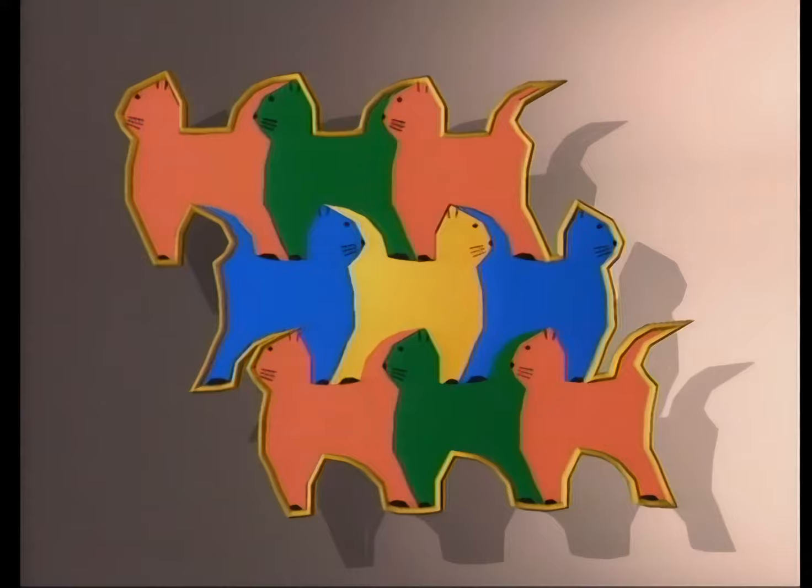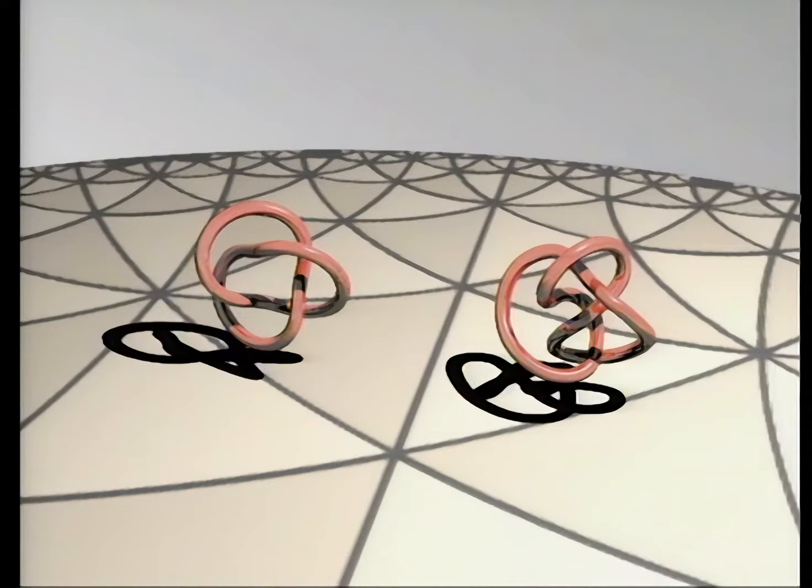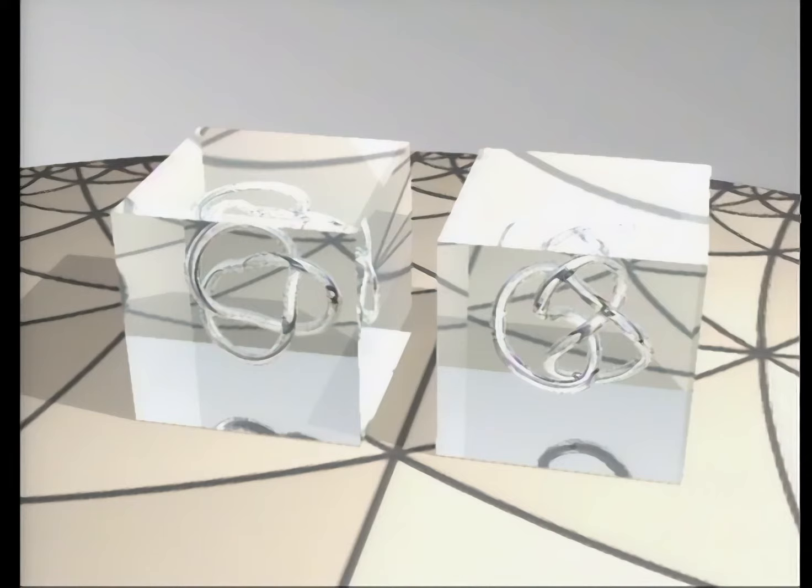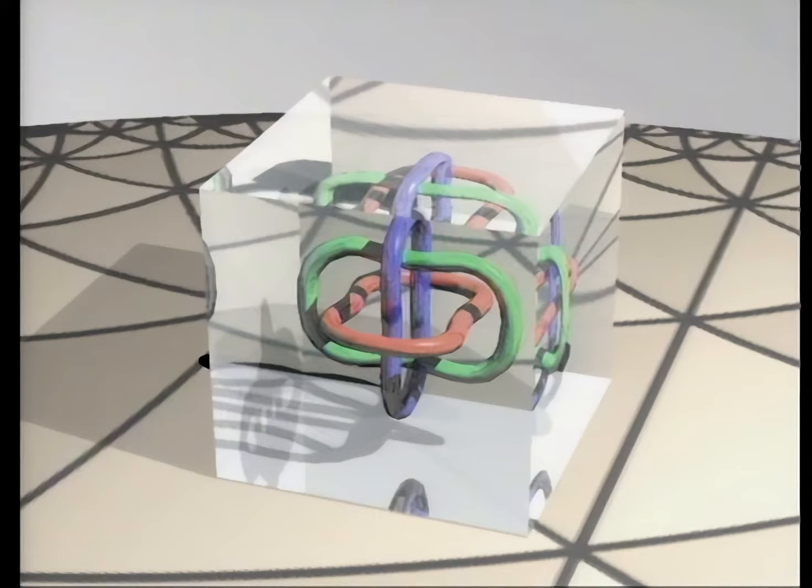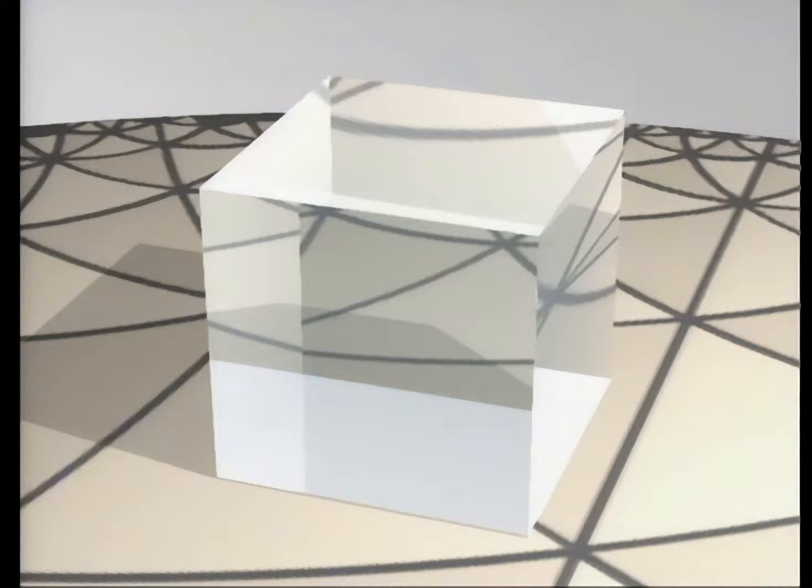The complement of a set is what's left when you take away the points of the set. So what's not a knot is called its complement. In 1988, Cameron Gordon and John Luecke proved that the complements of different knots can never be the same space. So studying the complements of knots helps us tell whether knots are the same or different. What is left when you take away the points of a knot or link from three-dimensional space?